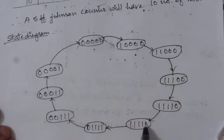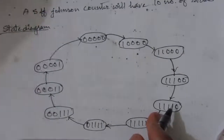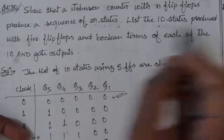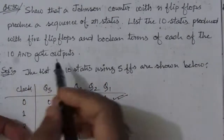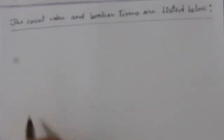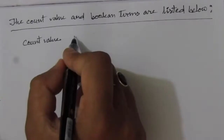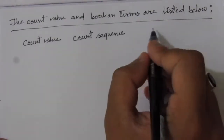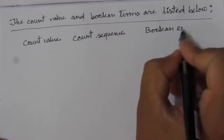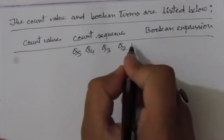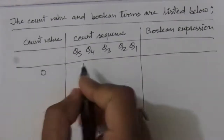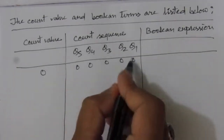In the second part of the problem we list the 10 states produced with 5 flip-flops — that is now shown. We also need to find the boolean terms of each of the 10 AND gate outputs, so we make a table with count value and the respective boolean expression.